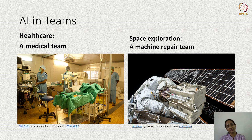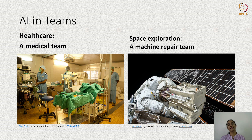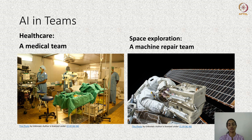Another example from healthcare is a surgical team with a robot teammate — a doctor, nurses, technicians, and a robot together performing a surgery. Another example of AI in teams is in space exploration. Consider an astronaut on a space station who, along with a robot, is doing routine maintenance on a machine. The team consists of ground control team members, crew inside the space station, the astronaut outside the space station, and the robot.